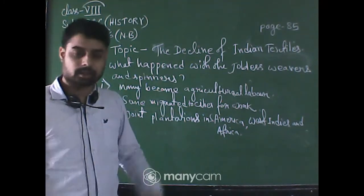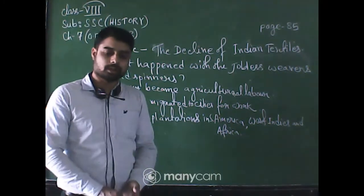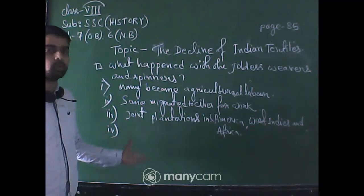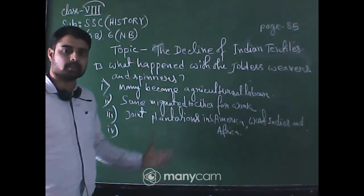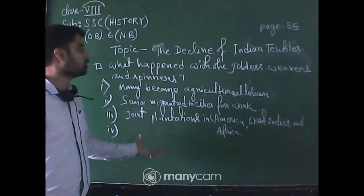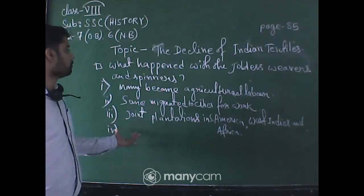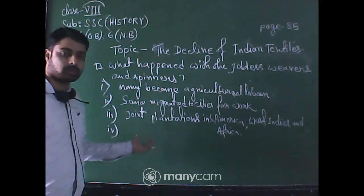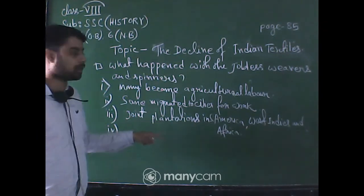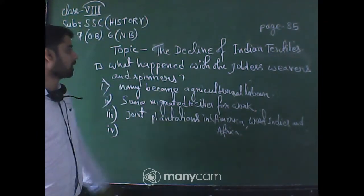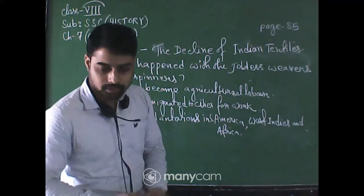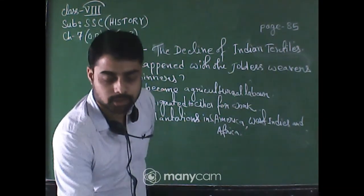The next subunit on cotton mills will be covered in the next class. Students, I hope you have understood the reasons for the decline of the Indian textile industry, how the industry turned back, and what happened with the jobless weavers and spinners. Thank you for watching. See you in the next class.